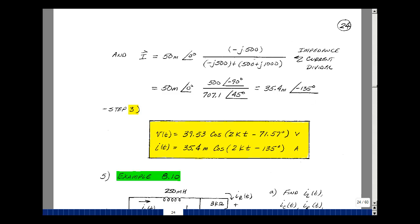And then our third step is to put our results in the time domain. So our voltage was 39.53 at angle minus 71.57 degrees. We're just going to put the cosine of 2000 T between the two.